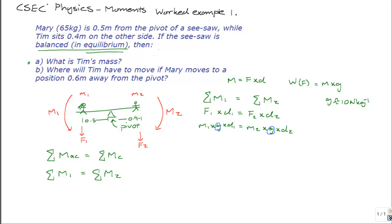So, let's substitute in the values that we're given. Mary's mass is 65 kilograms, G is 10 N per kilogram, Mary's distance from the pivot is 0.5 meters, Tim's mass is unknown, so let's write it as M2 for now. The gravitational acceleration is 10 N per kilogram, and Tim's distance from the pivot is 0.4 meters.